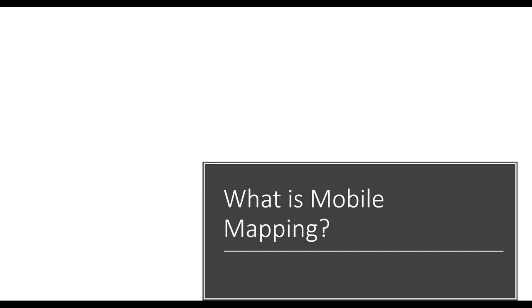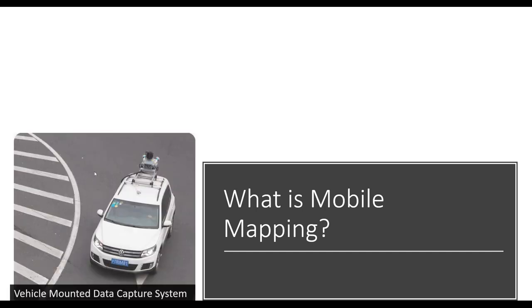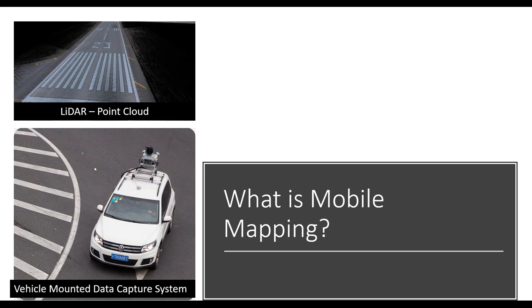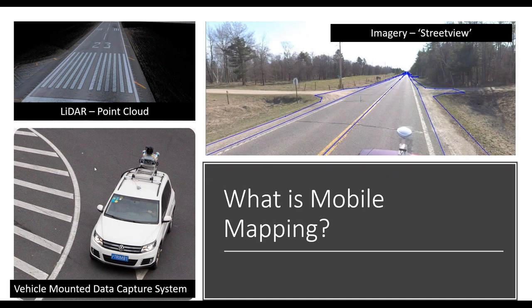Mobile mapping is typically a vehicle-mounted data capture system, like you see mounted on crossbars on the roof of a vehicle. It captures lidar data — a point cloud — and typically imagery to go along with that, such as a 360-degree street view camera.